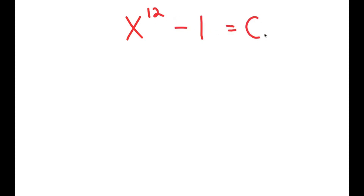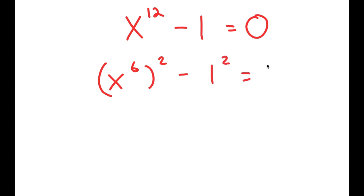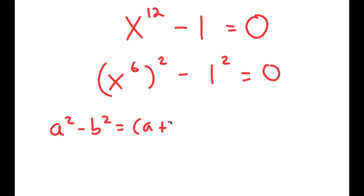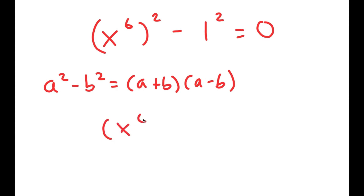In this video, I'm going to solve the equation x to the power of 12 minus 1 is equal to 0. To solve this, I'm going to first rewrite this as x to the power of 6, squared, minus 1 squared is equal to 0. The reason I'm doing this is so I can use the property a squared minus b squared equals a plus b times a minus b. So this turns into x to the power of 6 plus 1 times x to the power of 6 minus 1, is equal to 0.